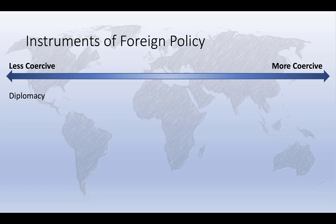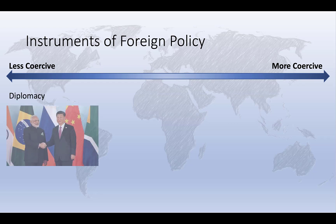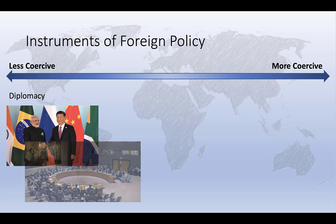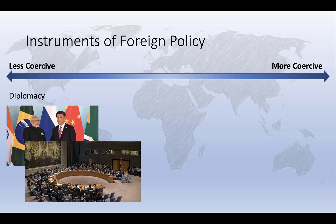The first is diplomacy. States can engage in negotiations with one another in order to explain national goals and priorities, to develop shared understandings, or to achieve common goals together. Because it's generally focused on voluntary negotiations, diplomacy is the least coercive or the least violent tool available to states to achieve their goals.